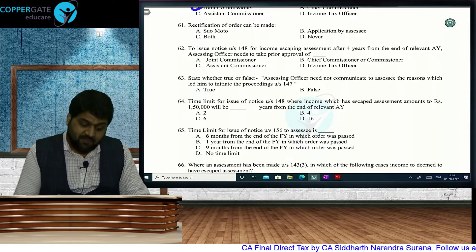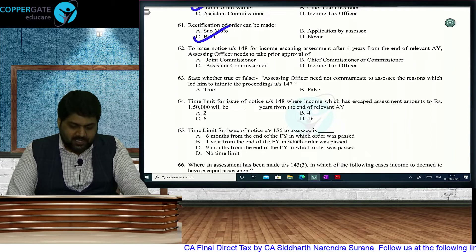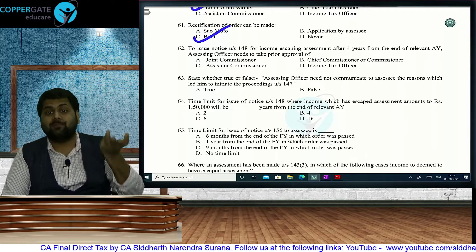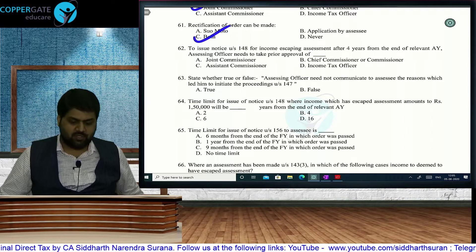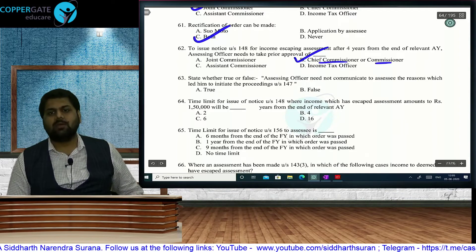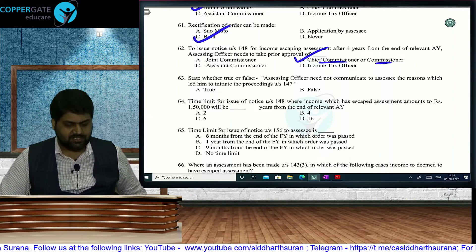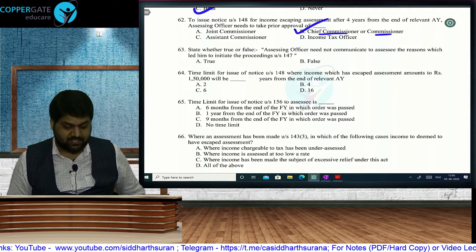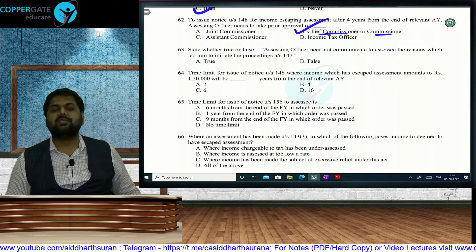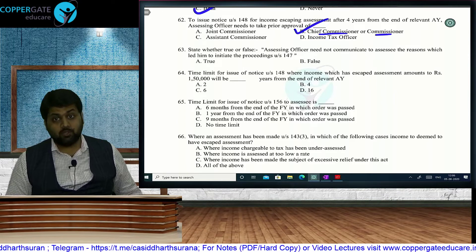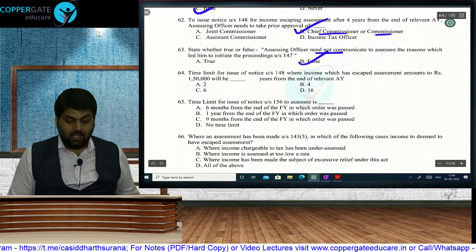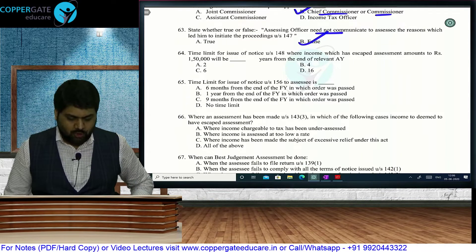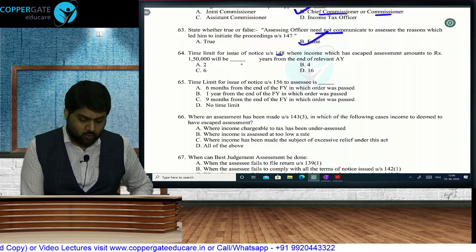After 4 years from the end of the relevant AY, notice under Section 148 requires approval of CCIT or CIT. Per Supreme Court judgment in GKN Driveshafts, an assessee must be communicated the reasons for initiating proceedings under Section 147. The question says 'need not communicate' — so the answer is FALSE. Time limit for issue of notice under Section 148 where escaped income amounts to Rs. 1,50,000 — it cannot be 4 years; it is 6 years.